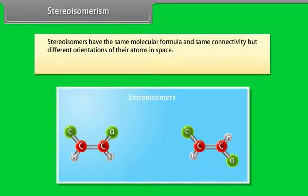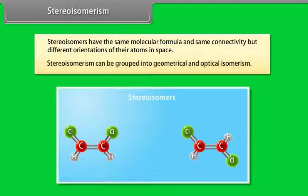Stereo-isomers have the same molecular formula and same connectivity but different orientations of their atoms in space. Stereo-isomerism can be grouped into geometrical and optical isomerism.